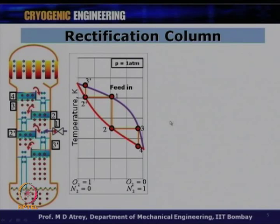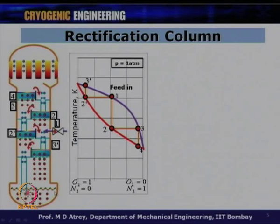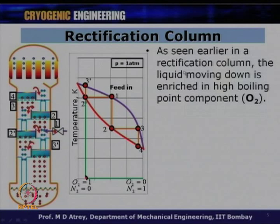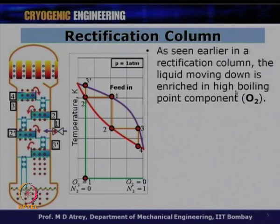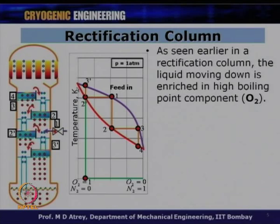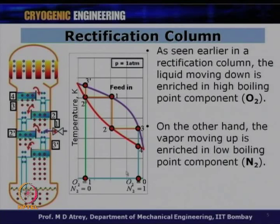Coming back to basics: the top of the column yields liquid nitrogen (the low boiling component) and the bottom yields liquid oxygen (the high boiling component) when the feed is air. As the liquid moves down it gets richer in the high boiling component and temperature increases; as vapor moves up it gets enriched in the low boiling component, nitrogen, and temperature decreases.